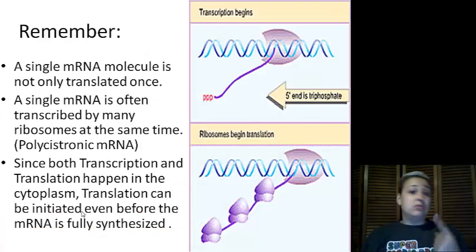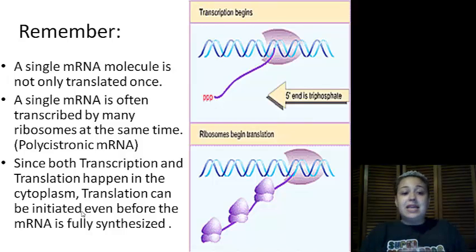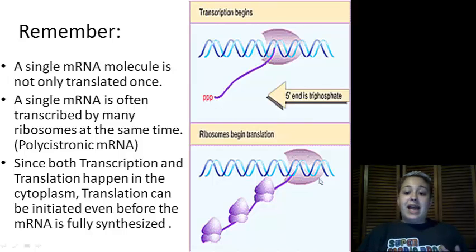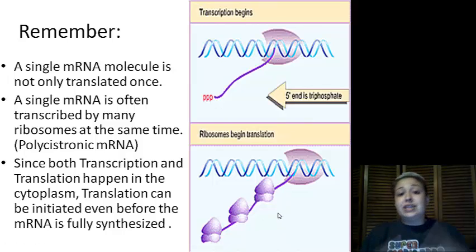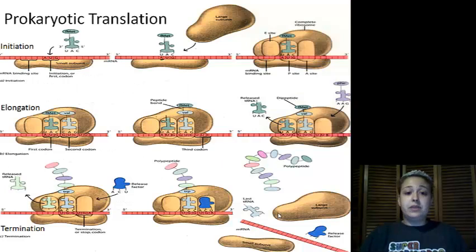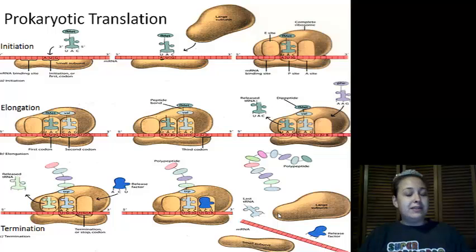A single mRNA is not only translated once — it can actually be translated many times, even at the same time. As the mRNA is being transcribed and released, we can see multiple ribosomes translating it simultaneously, so transcription and translation can basically happen at the same time in prokaryotes. I'm going to end with this nice overview — check it out, study it, know it, and I hope you have a good night. Thank you.